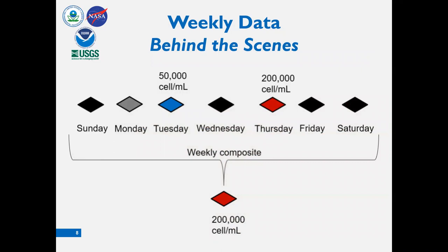How does one interpret the Cyan weekly value? A single maximum value is provided for each week. Each app weekly data point represents the maximum detected value for that week of measurements. For example, if there was no satellite data on Sunday, Wednesday, Friday, or Saturday due to cloud cover, and on Monday the value was not above the minimum detection limit, but on Tuesday a value of 50,000 cells per milliliter were detected, and on Thursday the value increased to 200,000 — then the value of 200,000 cells per milliliter would be reported by Cyan for that week.